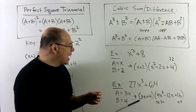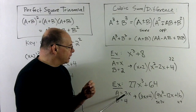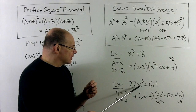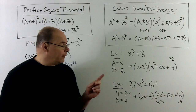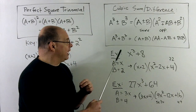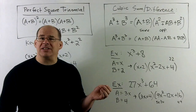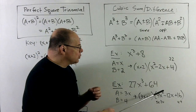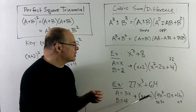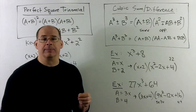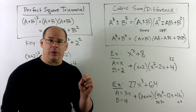Let's try 27x³ + 64. What cubes up to 27x³? Three cubes to 27, and x cubes to x³, so a = 3x. For 64, four cubes to 64, so b = 4. Plus in the middle, so we drop into the pattern: (3x + 4)(9x² − 12x + 16). A common error here is the bookkeeping on the second factor — squaring 3x carefully gives 9x², and b·b = 4·4 = 16.